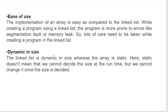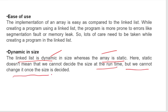Dynamic in size: a linked list is dynamic in size whereas an array is static. Static does not mean we cannot decide the size at runtime, but once declared the size cannot be changed — for example, int a[5] is fixed. In case of a linked list there is no such fixed declaration; if I want to add a node I simply add it, making it dynamic.